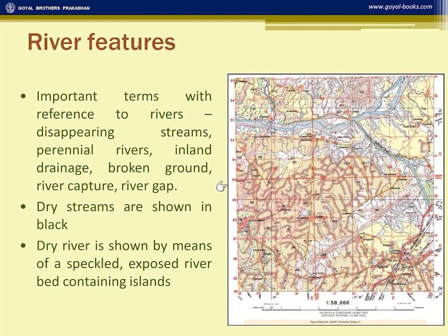A question may be asked: in grid reference 9478, the stream is not meeting the main river — why? This could be because there is a limestone region, or a desert region where evaporation is very high, or the water seeps in before reaching the main river. Hence, it is called a disappearing stream.